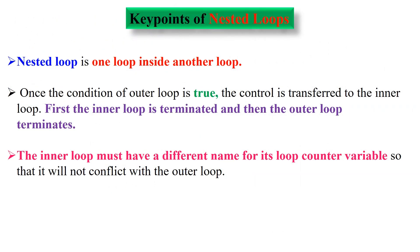Let's recall the key points of nested loops. A nested loop is one loop inside another loop. Once the condition of the outer loop is true, control is transferred to the inner loop. First the inner loop terminates, and then the outer loop terminates. The inner loop must have a different name for its loop counter variable so that it will not conflict with the outer loop.